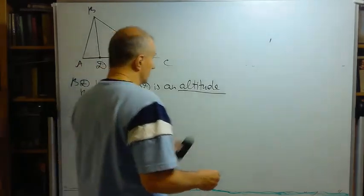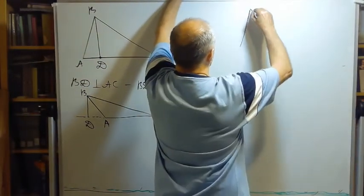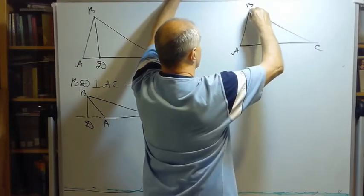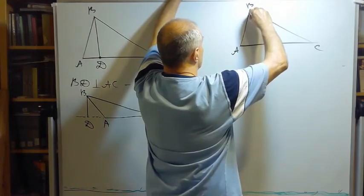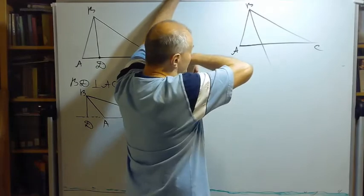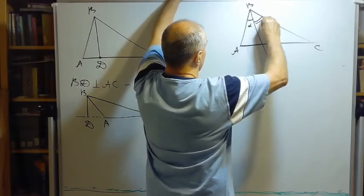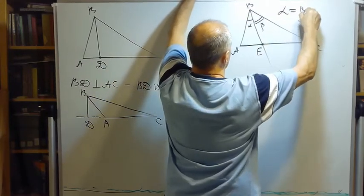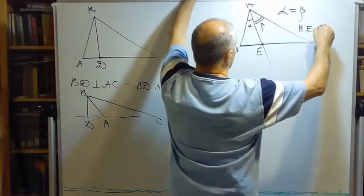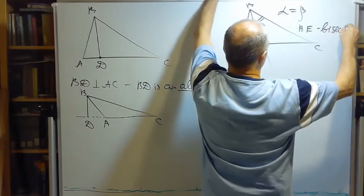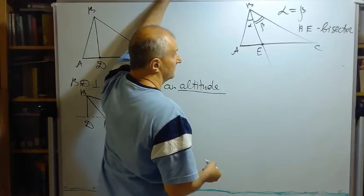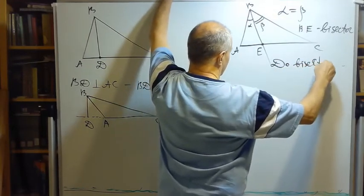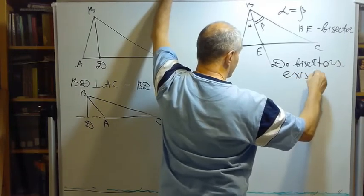There is also a special segment called a bisector. ABC, a segment that splits an angle at the vertex into two congruent parts. Alpha, beta. Then this BE, alpha is congruent to beta, then BE is called a bisector. And of course, you can draw a similar one from two other angles, if it exists. Do bisectors exist? We will prove they do.